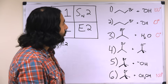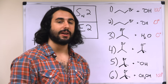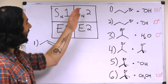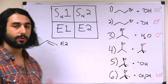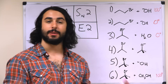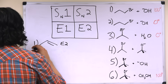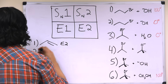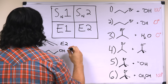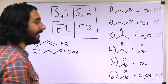Same setup for example two — both the substrate and the base tell us we're looking at SN2 or E2. Now we're looking at a cold temperature, so we're going to favor SN2. So we're looking at the SN2 product as our most likely outcome.